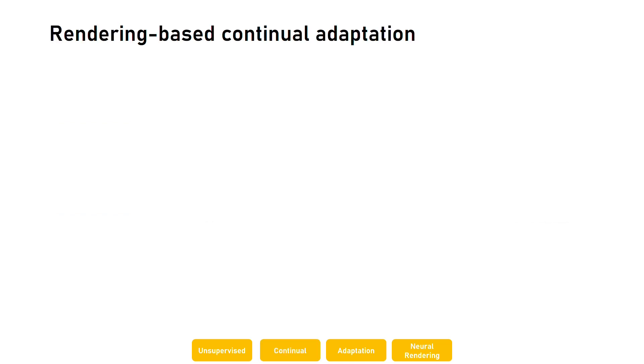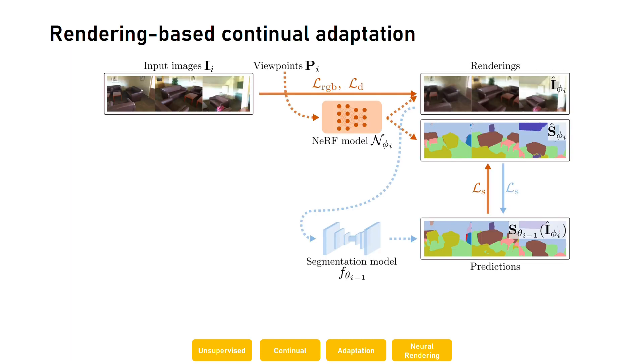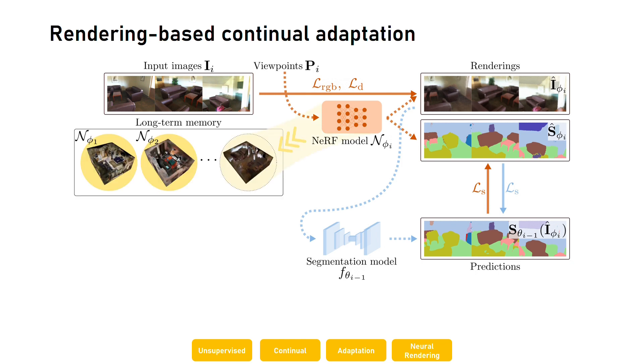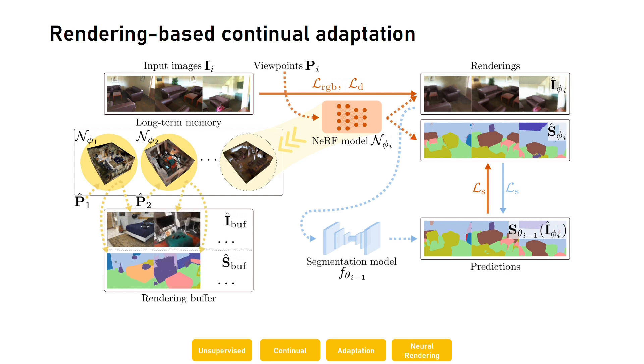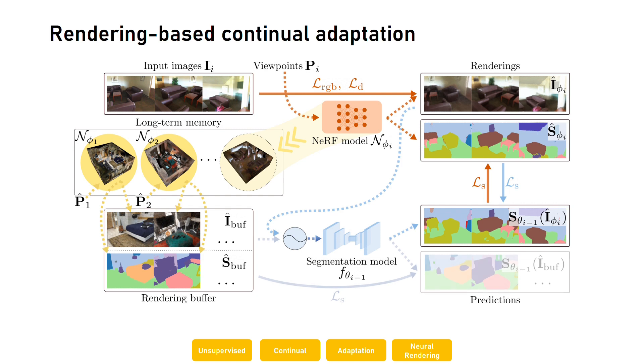We propose to address this problem through rendering-based continual adaptation. In particular, since NeRF compactly encodes color and semantic content at a limited fixed memory size, we store the NeRF model of each visited scene in a long-term memory, from which we then generate both color and semantic renderings. We use these renderings to populate a fixed size replay buffer. When adapting to a new scene, we then mix images and pseudolabels from the adaptation scene with renderings from this memory buffer and concurrently supervise the network with both, effectively counteracting forgetting of the previous scenes.